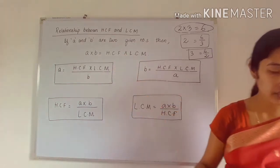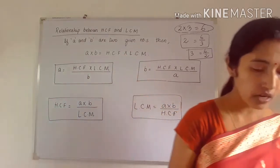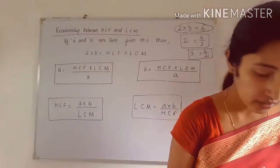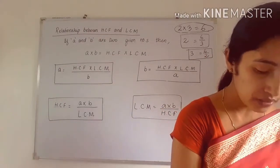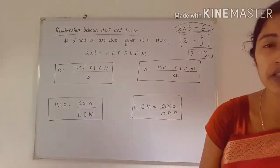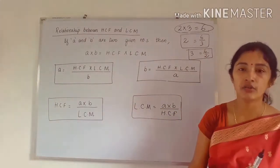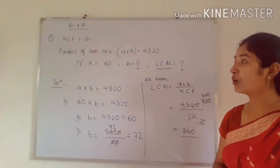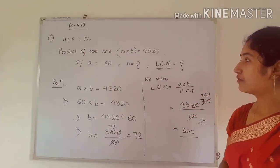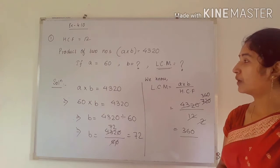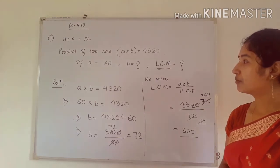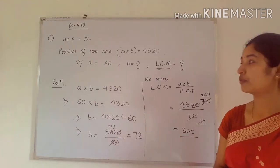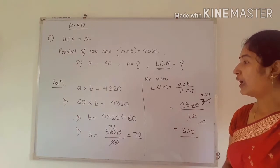Now let us do Exercise 4.10. Your task is to complete the table on page number 59. In question number 1, HCF is given and the product of two numbers is given. The first number is 60 — you have to find the second number and also the LCM.